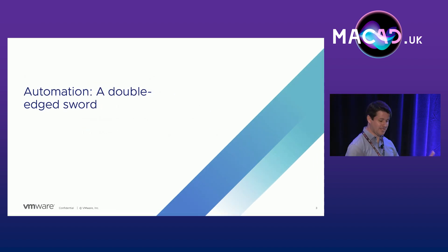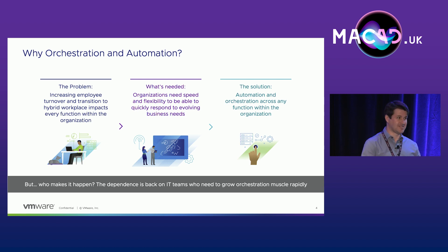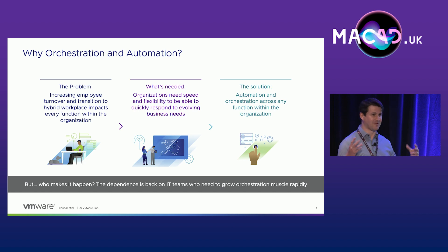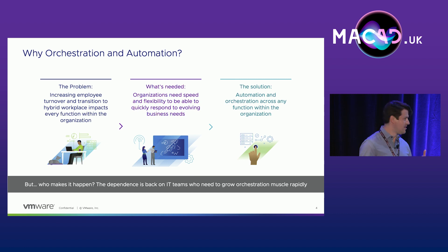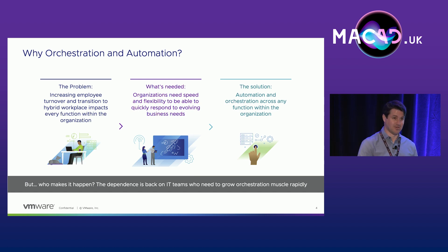Starting with automation — why is it cool and what problems does it bring? Nothing really makes the point better for why orchestration and automation is important more than just the state of the work environment over the past couple of years. Things like the pandemic, the proliferation of remote and hybrid work, and the great resignation where employees are demanding all sorts of flexibilities really puts organizations in a spot where they have to change how they do business at a very core level very quickly.